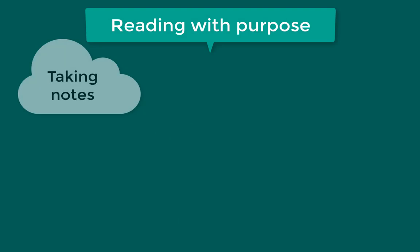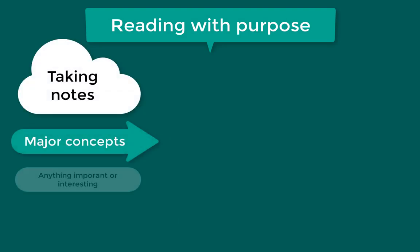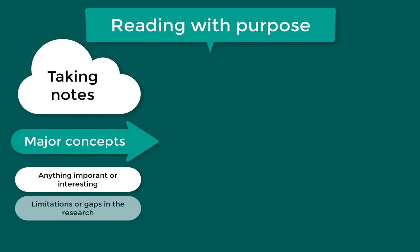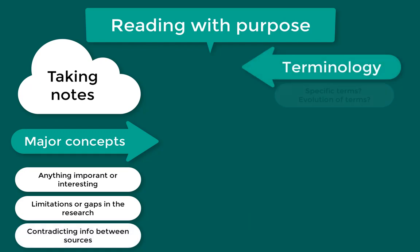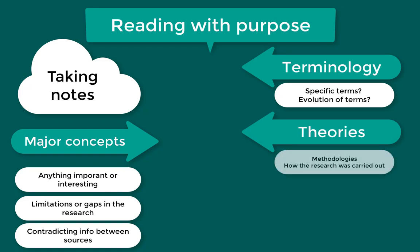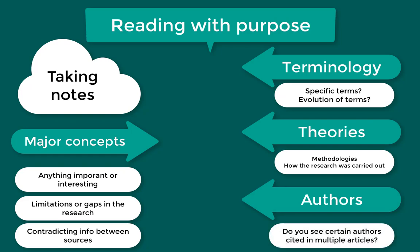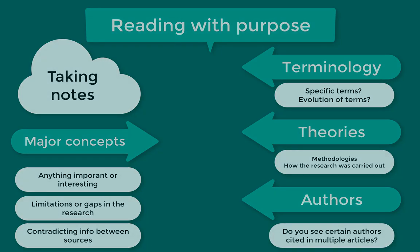When you start reading sources, take notes in your own words. Think about the major concepts of a source, anything you think is important or interesting, any limitations or gaps that you notice in the research, and any contradicting information you find between different sources. Take note of the terminology you're seeing — are there specific terms that are used in the research? Have these evolved over time? Look for different theories and methodologies that have been used in relation to your topic. Be aware of who is writing about your topic — are there certain authors who have published a lot of research or who are leaders in the field?